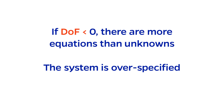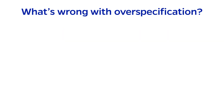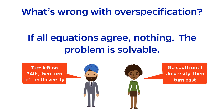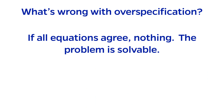If degrees of freedom is negative, there are more equations than unknowns, and the system is said to be over-specified. Although this doesn't seem like a bad thing to have more information than necessary, it means that some of the information isn't required to arrive at an answer. If all the equations agree, I like to call this redundant information. This is like asking two different people for directions and having both of them tell you the same thing — it's nice to get confirmation, but not exactly necessary.